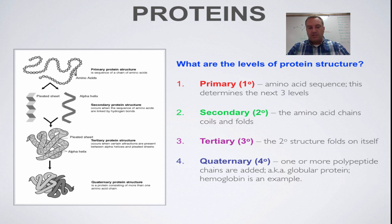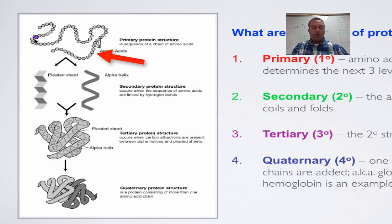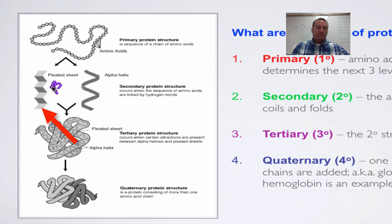I'm going to focus in on this picture to the left. At the very first level, we see primary — that is simply your sequence of amino acids, just like beads on a string or pearls on a necklace. However these 20 amino acids interact with each other is going to lead to the next levels. In the secondary structure, your primary structure is either going to fold — think of an accordion or a paper fan — and this is called a beta pleated sheet. The symbol for beta is a capital letter B with a long tail.